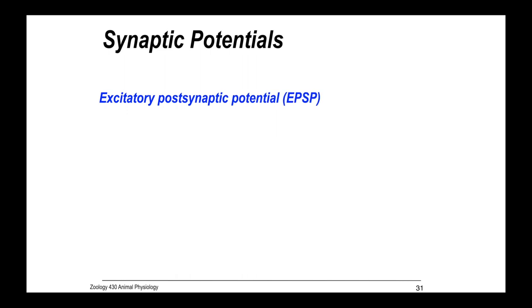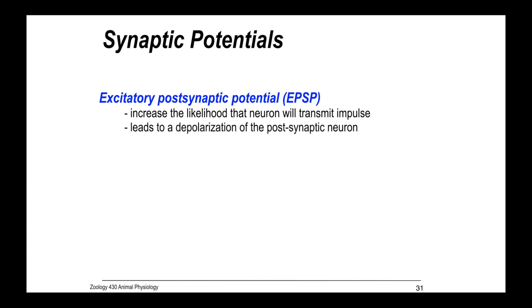We have these excitatory postsynaptic potentials. They're going on to the dendrites and those EPSPs increase the likelihood that the neuron will transmit the impulse. It leads to a depolarization of the postsynaptic neuron. That results from either increasing the permeability of sodium or calcium. If the stimulus is sufficient, it could lead to an action potential.